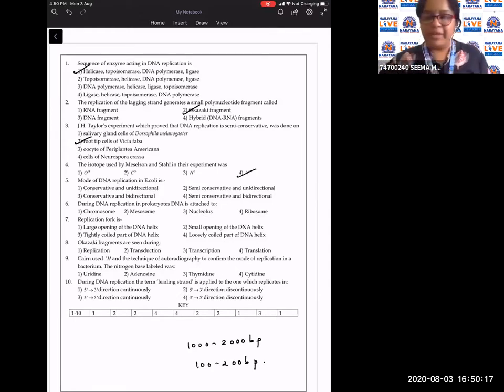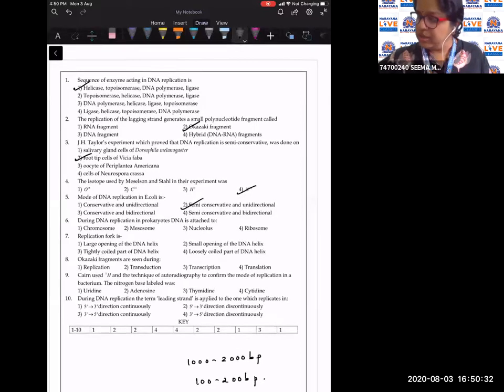Mode of DNA replication in E. coli is: it is semi-conservative and unidirectional. Sorry children, it is semi-conservative and bi-directional because it takes place in both the directions.